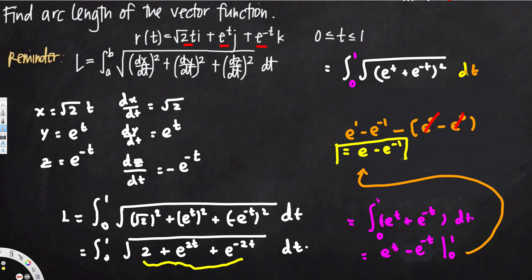There are multiple ways to write this answer. For example, e^(−1) is the same as 1/e, so you can write it as e minus 1/e. If you use e as a common denominator, this becomes (e² − 1)/e. That's how you solve this kind of problem — hope you found this helpful, see you next time.